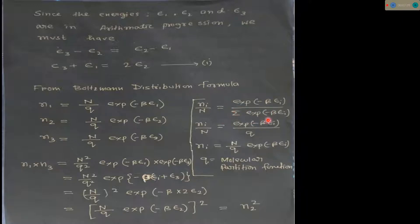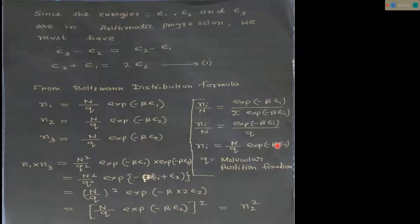The term in the denominator — the summation of exponential minus beta epsilon — we call q, the molecular partition function. So we can write Ni equal to N upon q, where q is the molecular partition function, into exponential minus beta epsilon i. Beta, as we all know, equals 1 divided by kT.